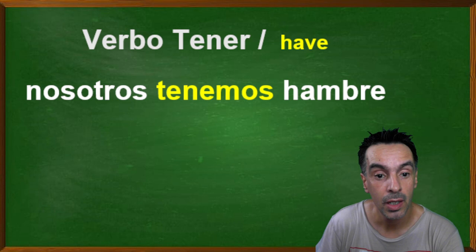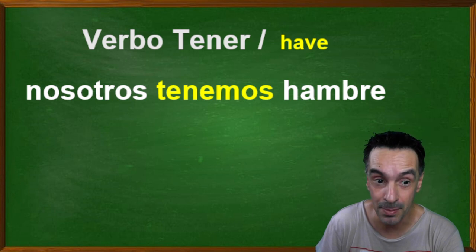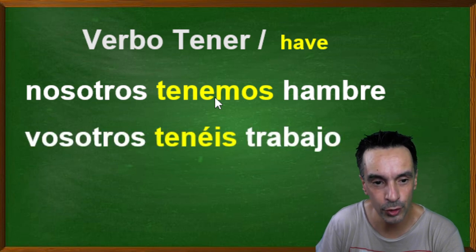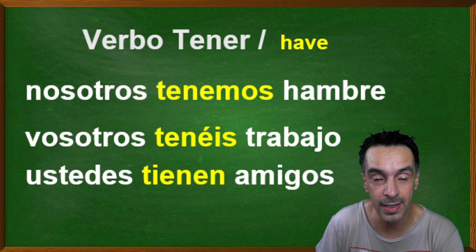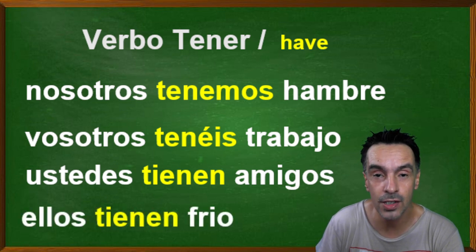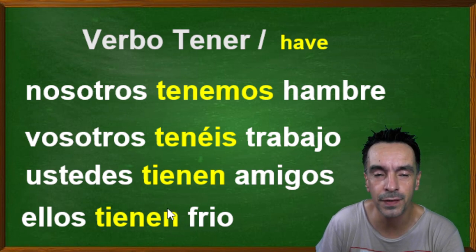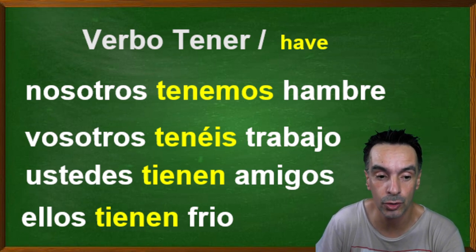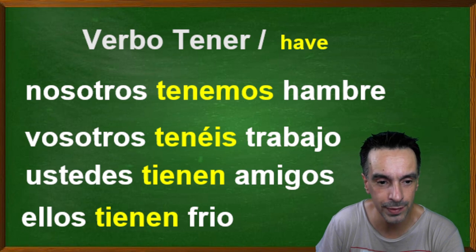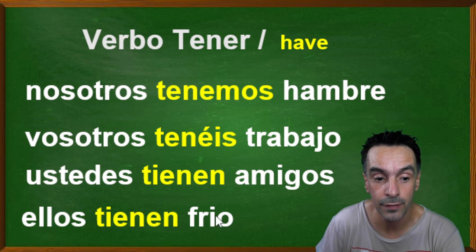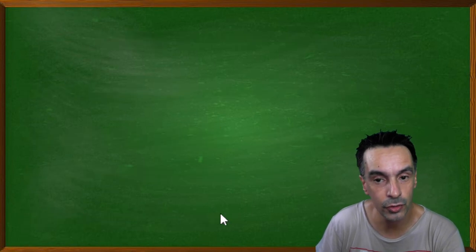We can use it in plural as well: nosotros tenemos hambre — we are hungry. Vosotros tenéis trabajo, ustedes tienen amigos, ellos tienen frío — they feel cold. Vocabulary: hambre means hungry, trabajo means work, amigos means friends, frío means cold.